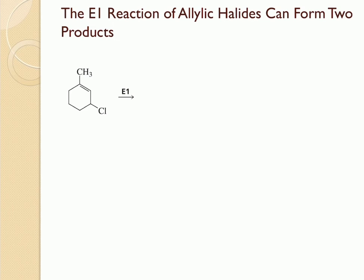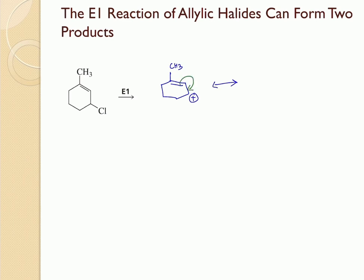In some cases, allylic halides can form two different carbocations through resonance, which can lead to two different products. Here is one such example. The leaving group leaves and creates a carbocation, which is resonance-stabilized to form another carbocation. In this case, one is a secondary allylic carbocation, and the other is a tertiary allylic carbocation. Each one of these reacts with a base to give a diene.